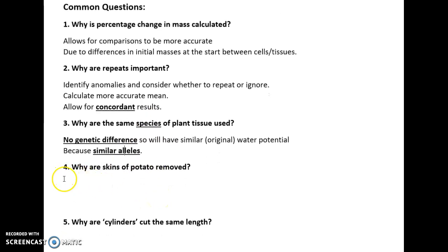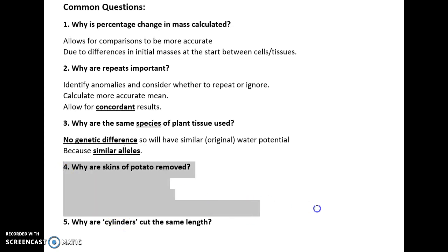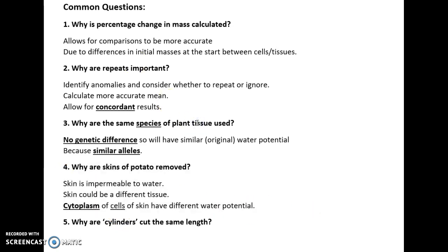Why are potato skins removed before weighing or placing in sucrose solution? Because the skin is impermeable to water, so it would stop any water moving in or out, creating a barrier. The skin could also be a different tissue with different alleles, meaning the cytoplasm of the skin cells would have a different water potential.